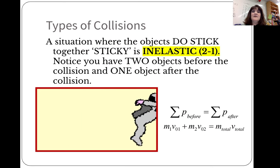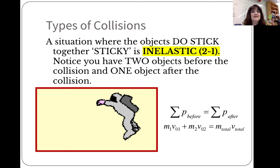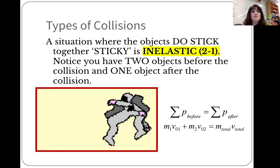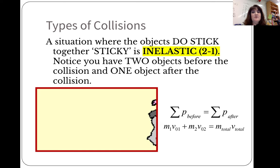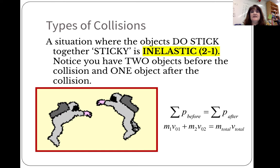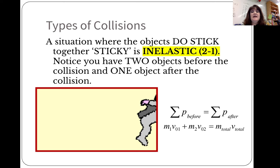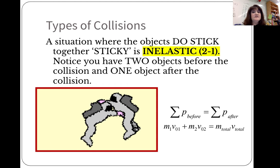The second type of collision we have is where they do stick together or sticky. This is an inelastic or two to one. Notice you have two objects before and one object after. Notice in the simulation, one astronaut is catching another, able to carry him back. So your general equation down there is momentum before is equal to momentum after. And you have two objects before and a total after. So let's look at an example.